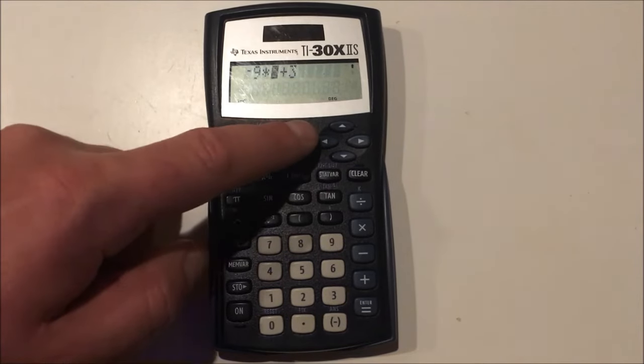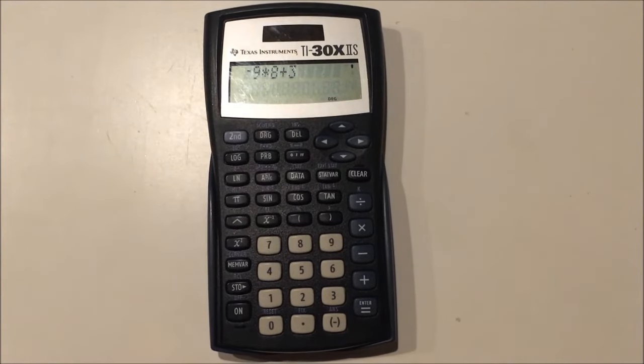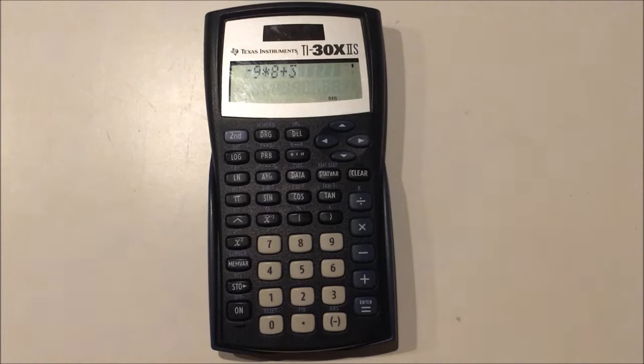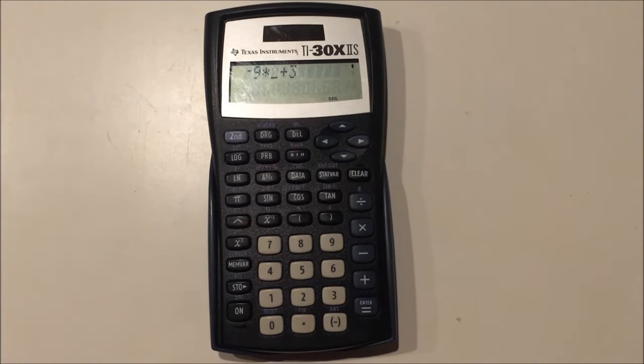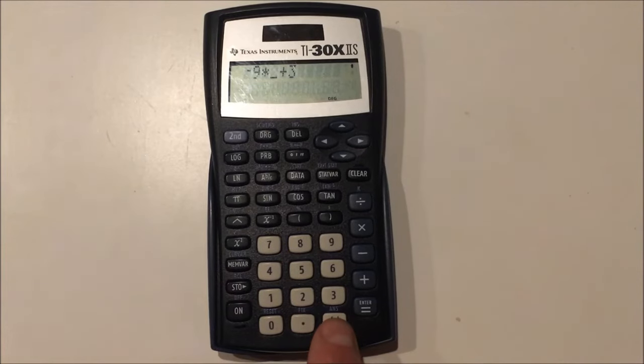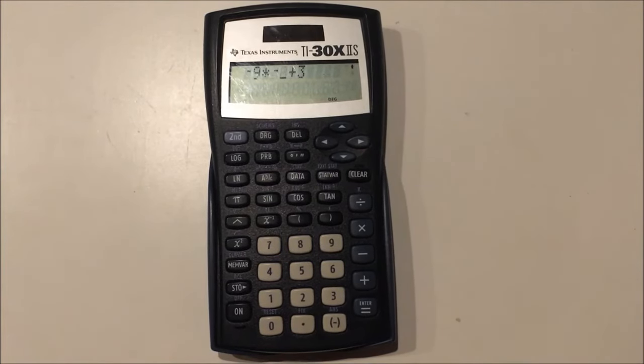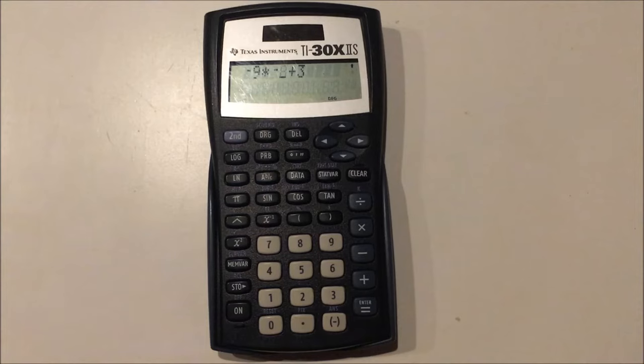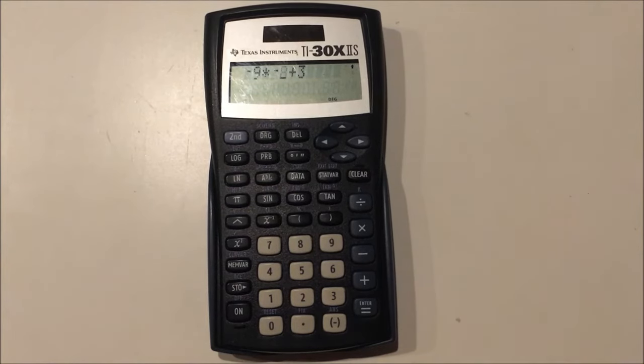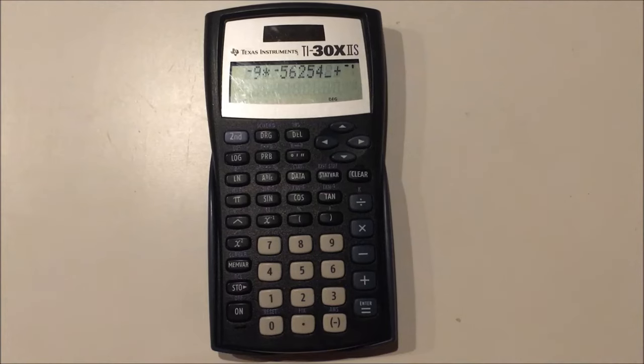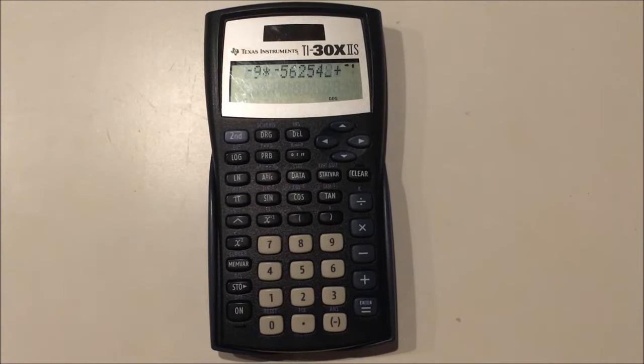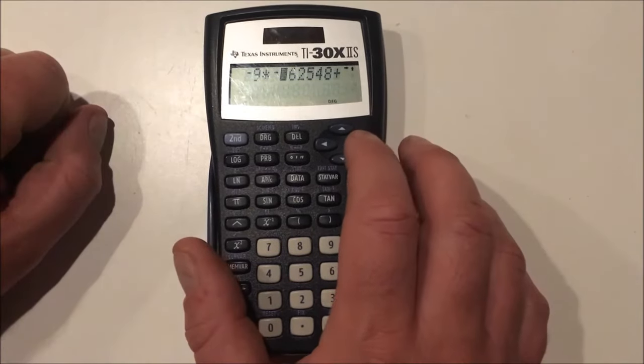So if I press delete now, it makes 8 blink in and out. What this means is not that 8 is going away, it means that I can insert anything before the 8 such as a minus sign. Now we see negative 9 times negative 8 plus 3. And I can keep inserting things in front of the 8 until I press an arrow button to get out.